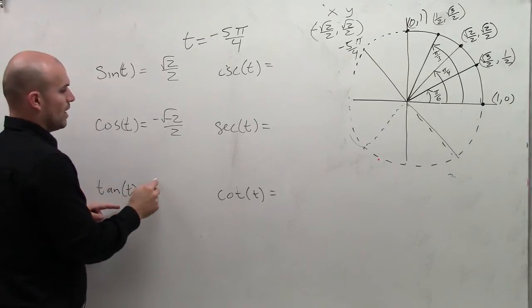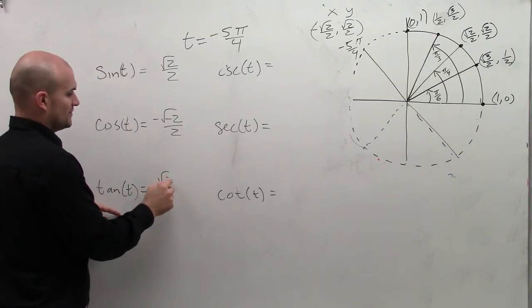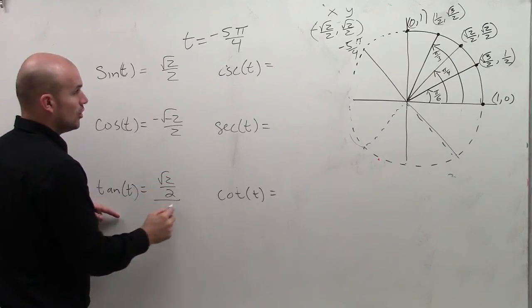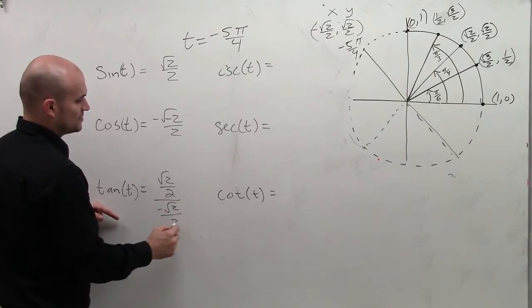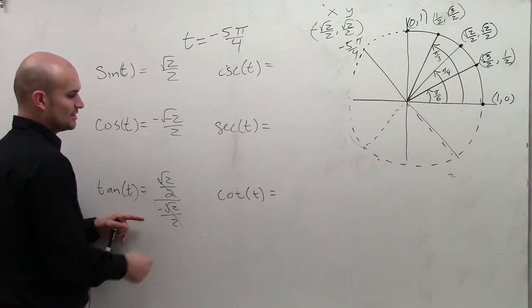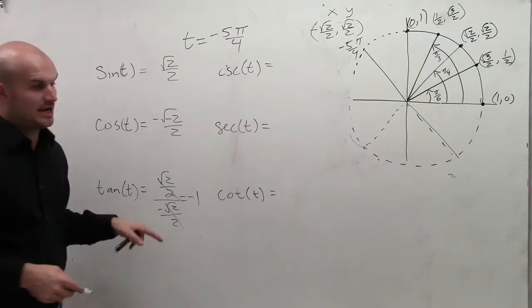Tangent is going to represent y over x. So it would be square root of 2 divided by 2 over negative square root of 2 divided by 2. You quickly notice that those two divide out to give you negative 1.